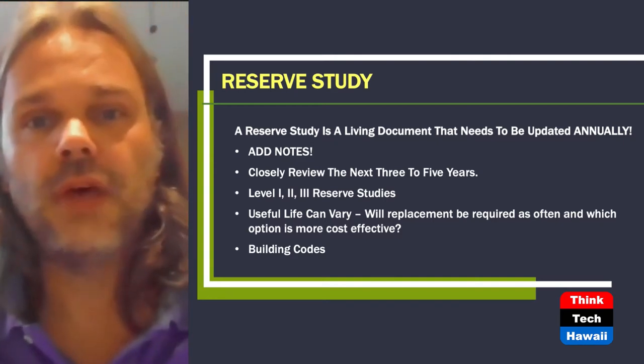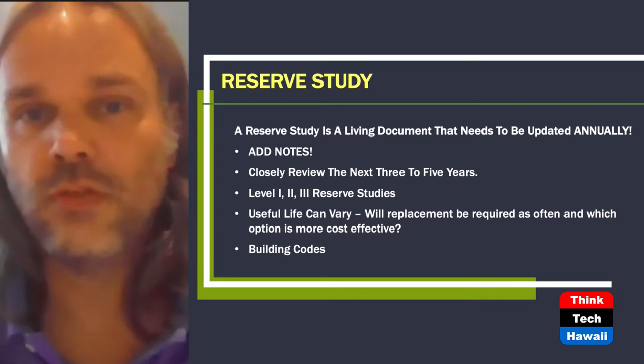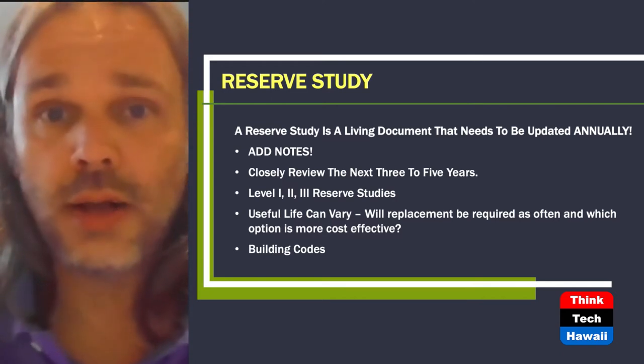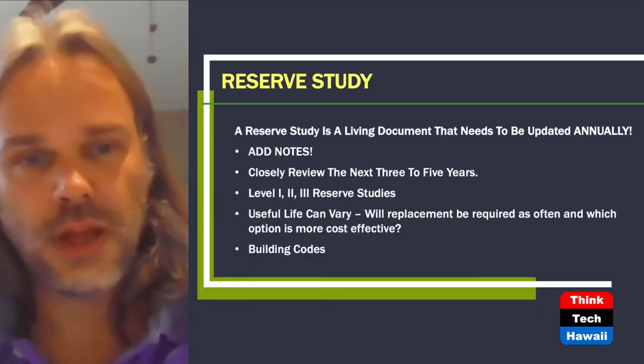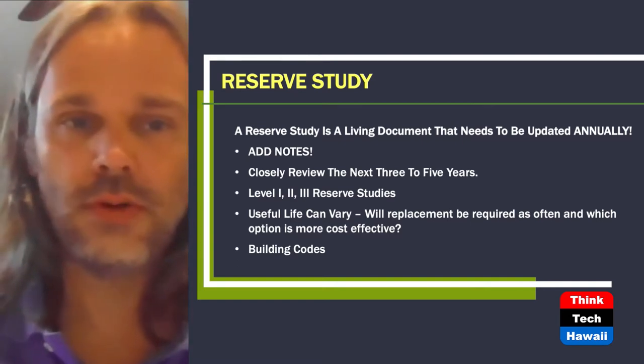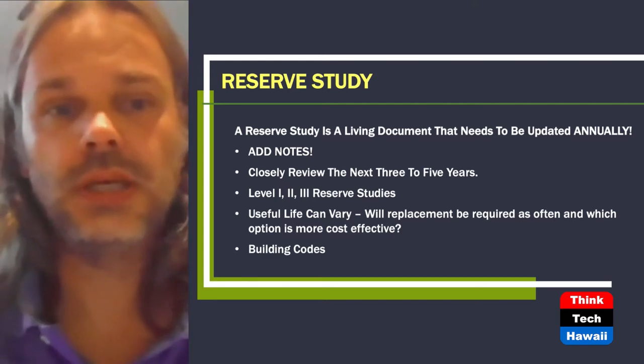There are three different levels to a reserve study. A Level 1 is the most thorough, where the reserve specialist performs a site walk of your property and quantifies the different components of your association — meaning they look at the number of light fixtures, square footage of asphalt or parking structure coating, square footage of rooftops, linear feet of railing. That quantification is what makes the Level 1 reserve study different from the others. A Level 2 reserve study is an update with a site visit, but you are not quantifying the components — you use information already prepared during the Level 1.